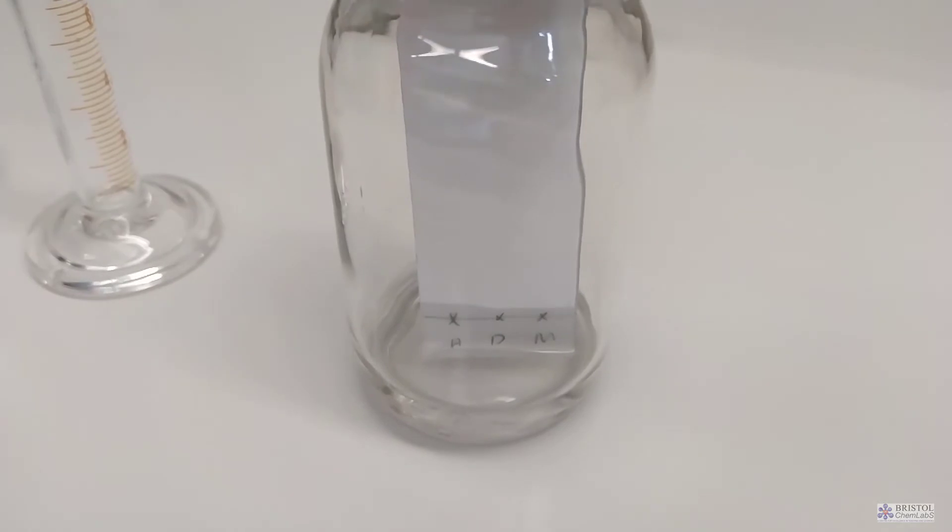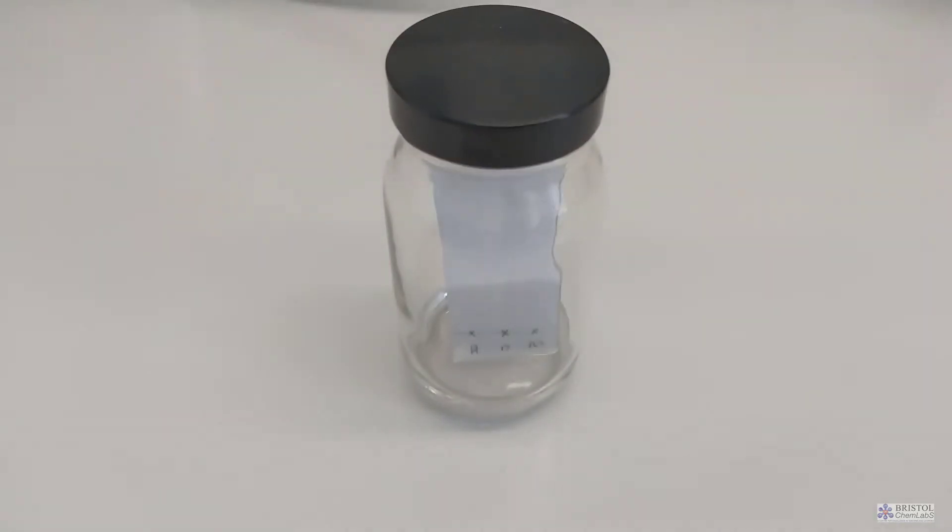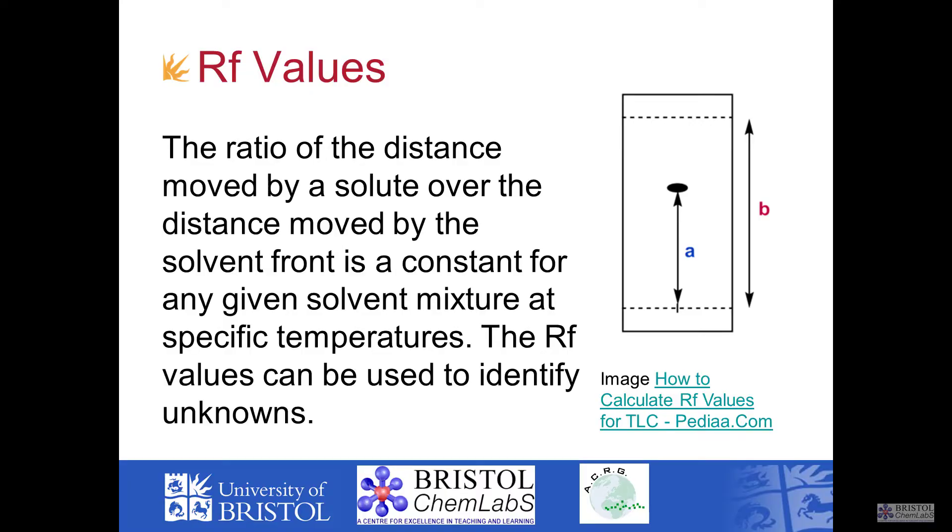As soon as the solvent front gets near to the top of the plate we unscrew the jar, take out our sample and immediately mark the position of the solvent front. If you wait more than a few seconds it will start evaporating and you won't know exactly where the solvent has got to. We would need to know where the solvent has got to if we were making calculations of RF values.